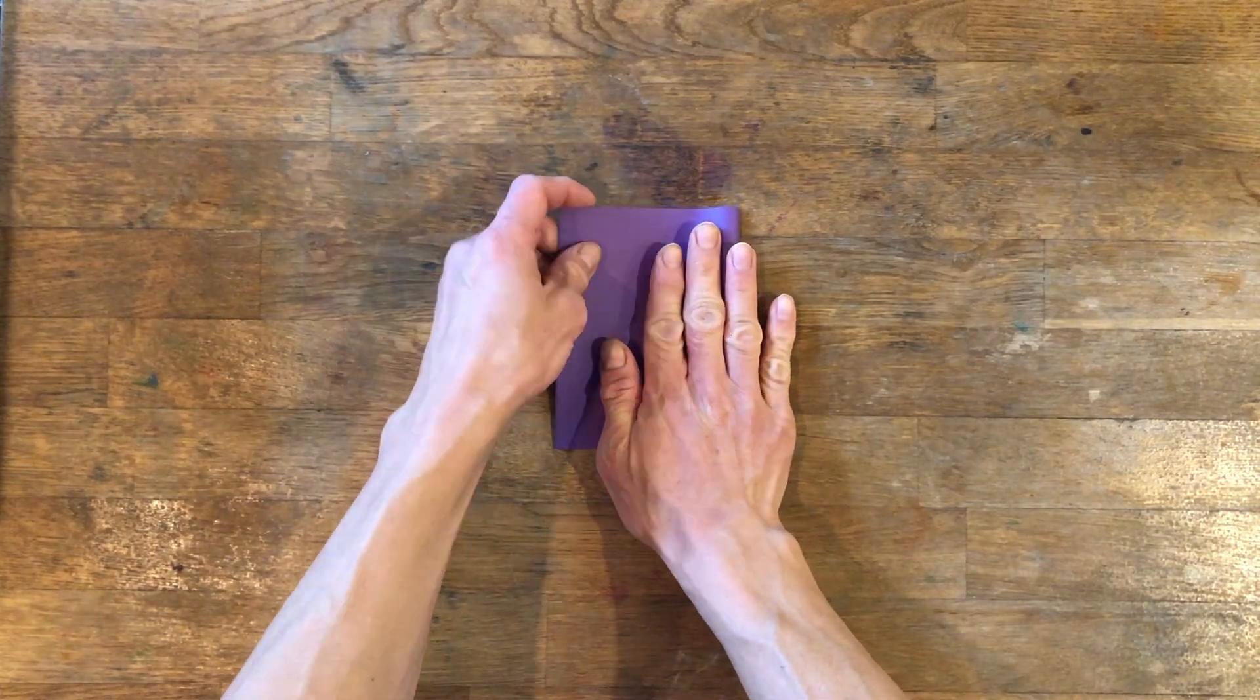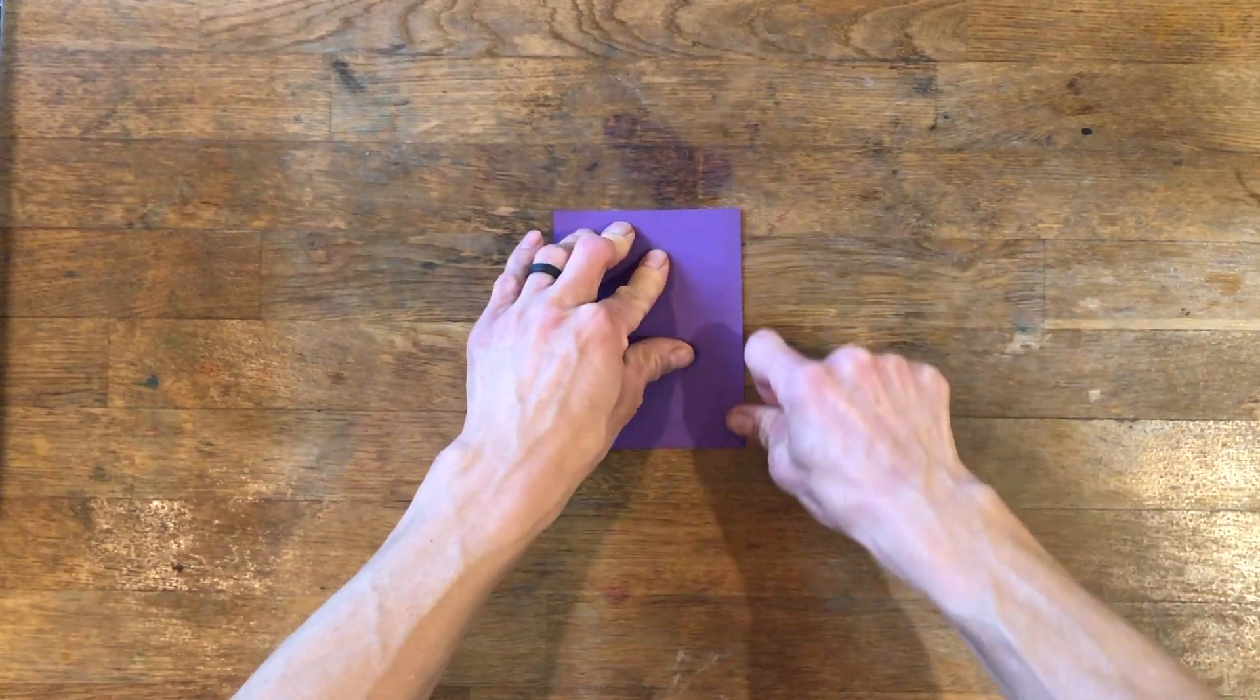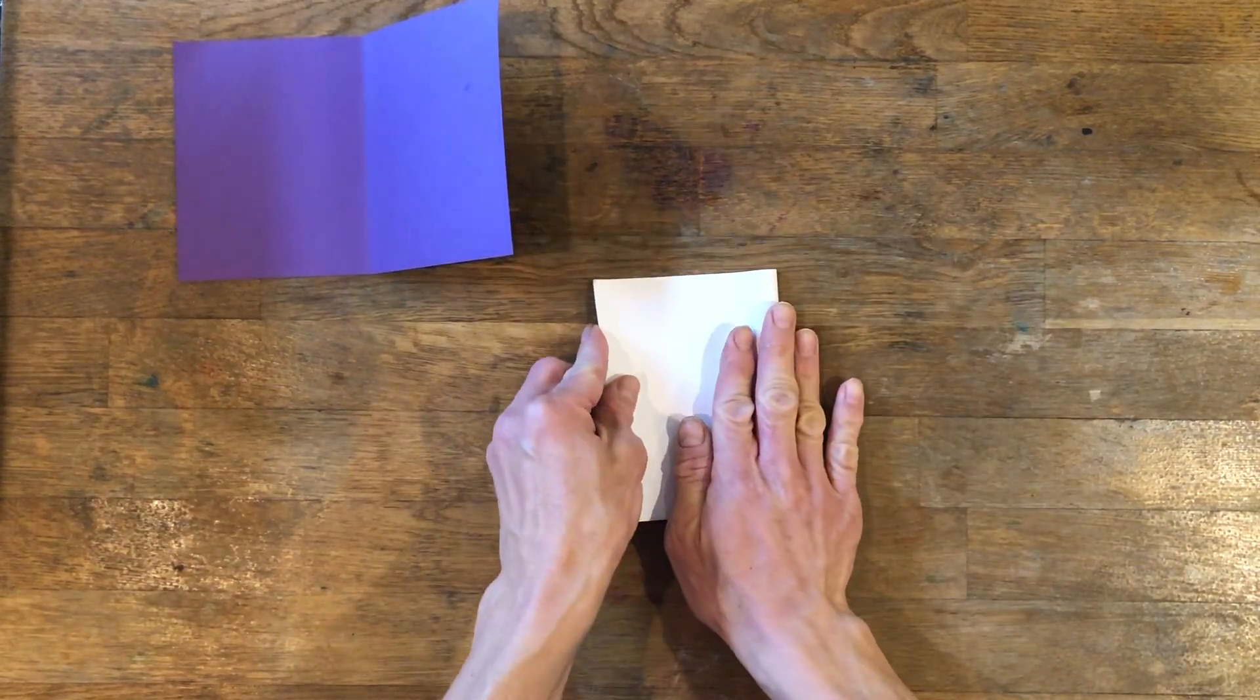To begin, we folded the colored card stock in half lengthwise, and then we folded the stack of copy paper in half lengthwise.